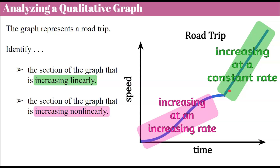So if you were asked to describe a segment: if it's a straight segment, you can say constant rate. If it's a curved section, you want to say either increasing or decreasing rate, depending on whether it's going up or going down from left to right.